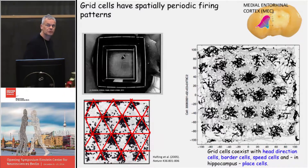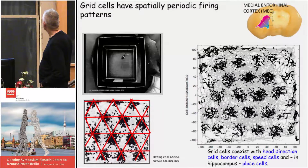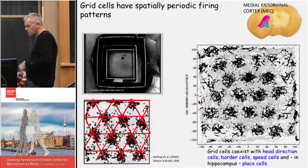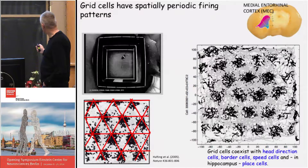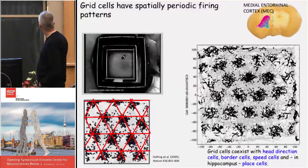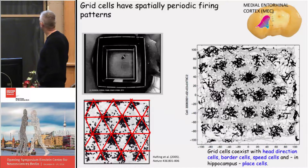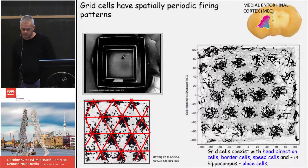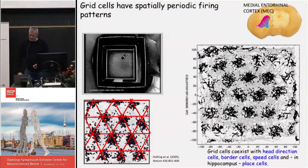These cells coexist with other types of cells in the medial entorhinal cortex. You also have head direction cells, border cells, and speed cells. They are more or less intermingled, with some bias for grid cells to be in layer 2, head direction cells to be deeper, border cells all over but strongly present in layer 2, and speed cells throughout.